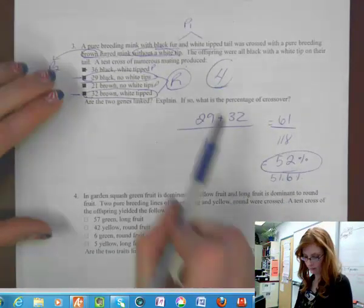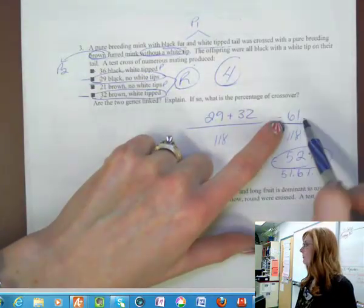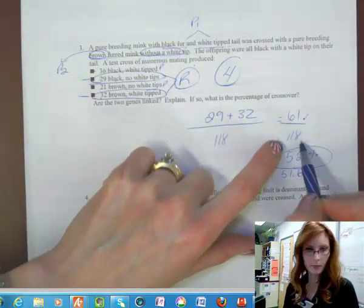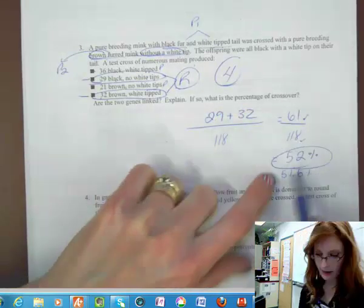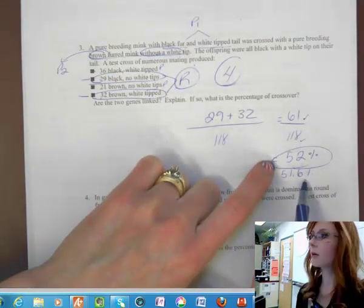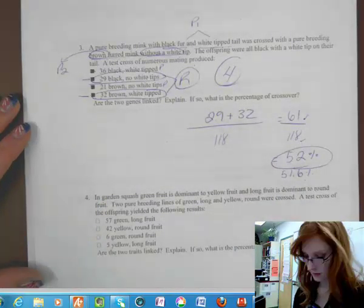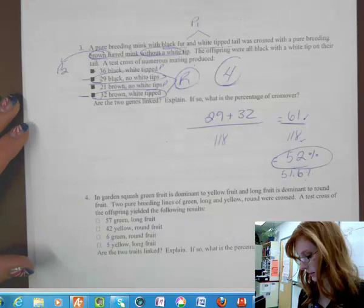Are we ready to double check? Okay. Make sure I've done this correctly. I added 29 and 32. I got 61. Is that correct? Divide it by 118. So 51.6% or I rounded it to 52%.